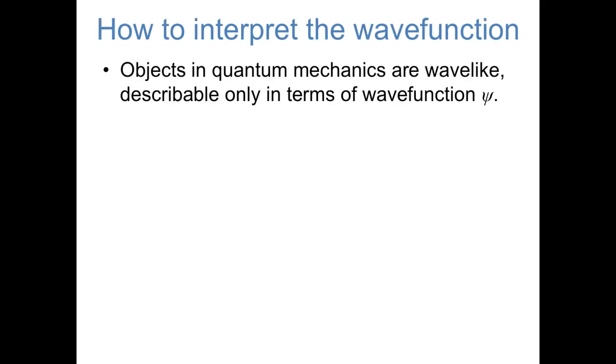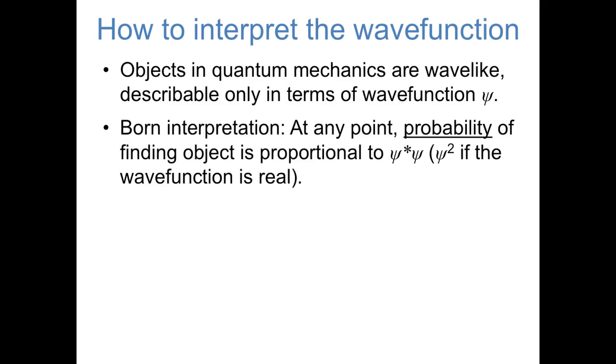I'd also like to talk a little bit about how to interpret the wave function. As we've said, objects in quantum mechanics can't be expressed as simple particles. They're wave-like and can only be described in terms of a wave function, psi. According to the Born interpretation of quantum mechanics, which is the traditional interpretation, at any point, the probability of finding an object is proportional to the wave function times its complex conjugate. Or, since the wave functions that we'll be dealing with are usually real, probability is proportional to the wave function squared.